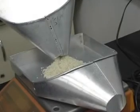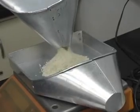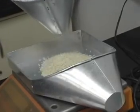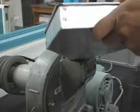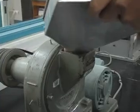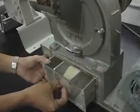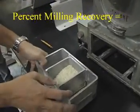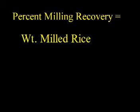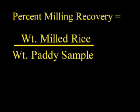Milling recovery refers to what percentage of the grain weight remains after milling the paddy. Using the abrasive whitener, mill the de-hulled samples, then compute the milling recovery by dividing the weight of the milled rice recovered by the weight of the paddy sample used, and multiplying this by 100.